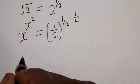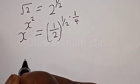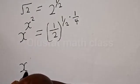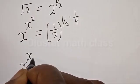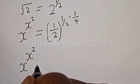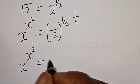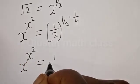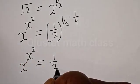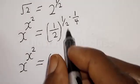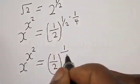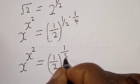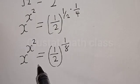Then we have x raised to power x squared is equal to 1 divided by 2, raised to power 1 divided by 8. At this point we're going to perform a trick.